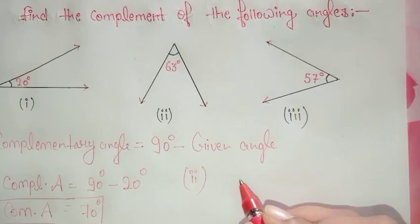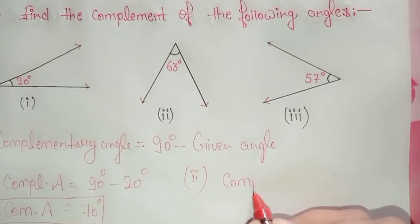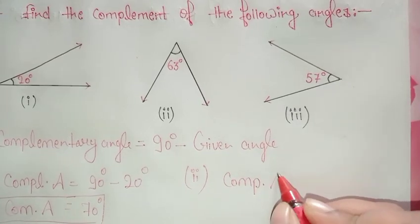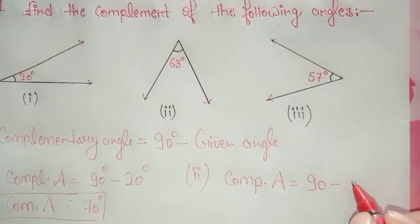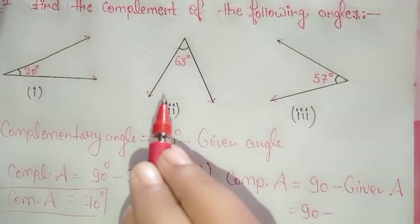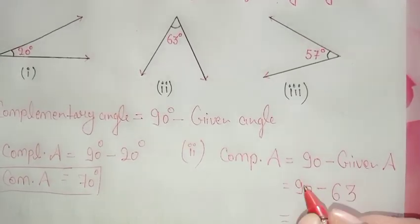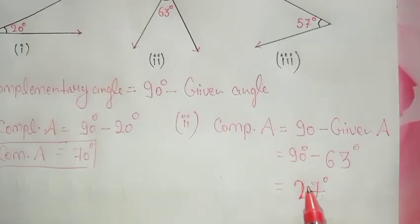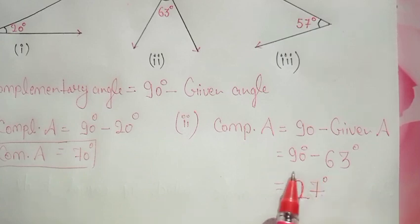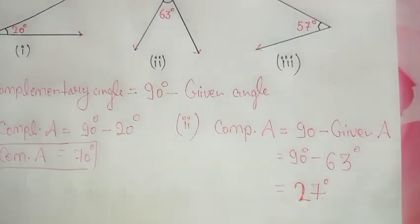The second one — you have to find the complement of 63 degrees. The formula is: complementary angle equals 90 minus the given angle. So the given angle is 63 degrees: 90 minus 63 degrees. When you subtract 63 from 90 degrees you will get 27 degrees. It means the complement of 63 degrees is 27 degrees.